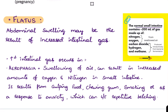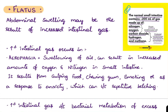Coming to the first F — flatus. Normally, the small intestine contains around 200 ml of gas, usually made up of nitrogen and oxygen from swallowed air, and carbon dioxide, hydrogen, and methane produced intraluminally from bacterial fermentation. Abdominal swelling may be the result of increased intestinal gas.